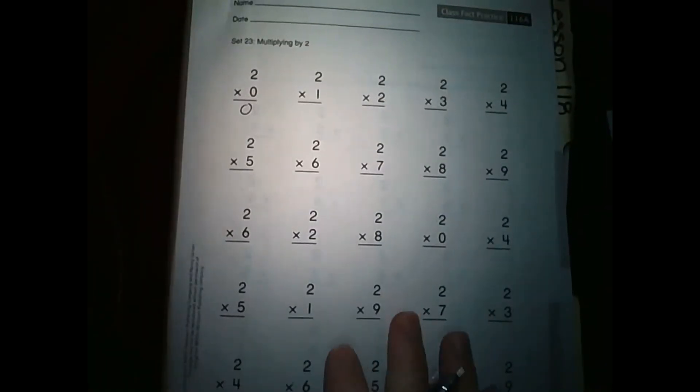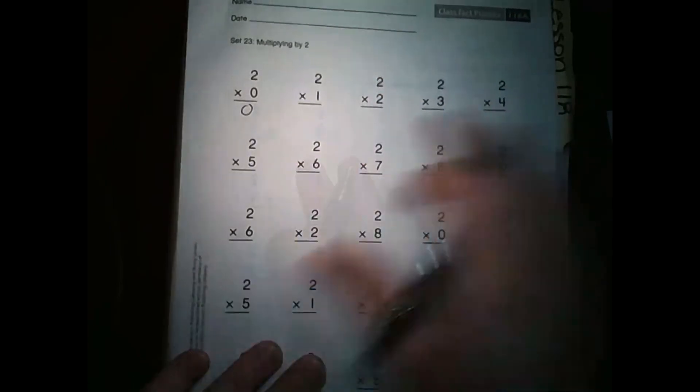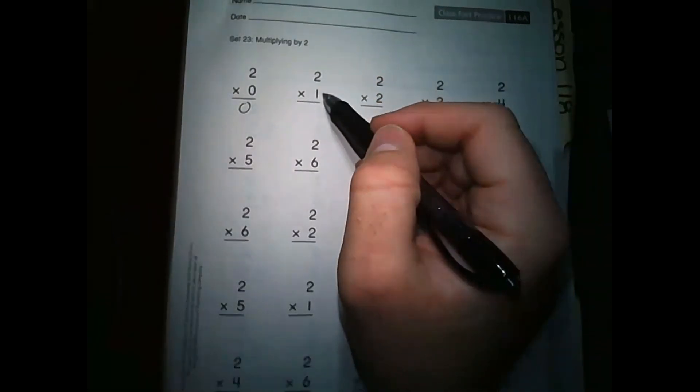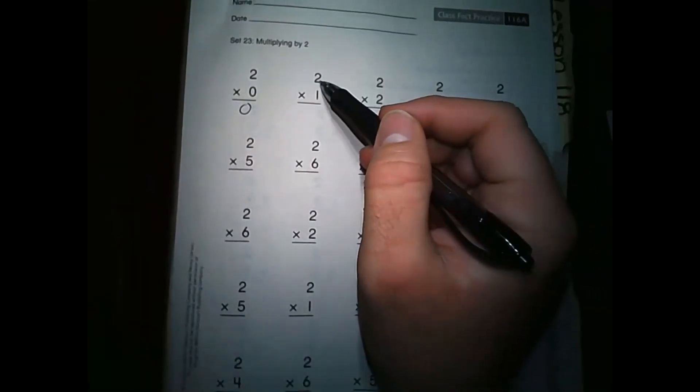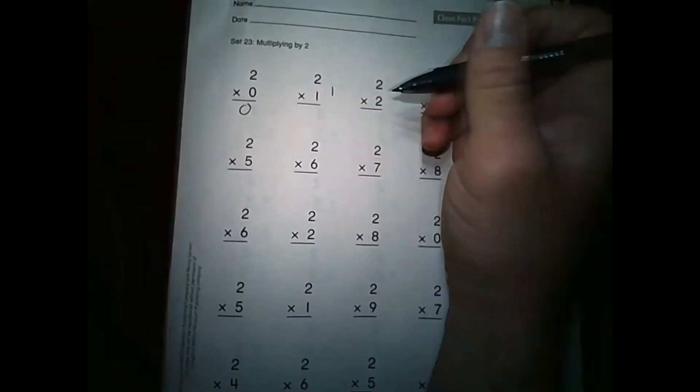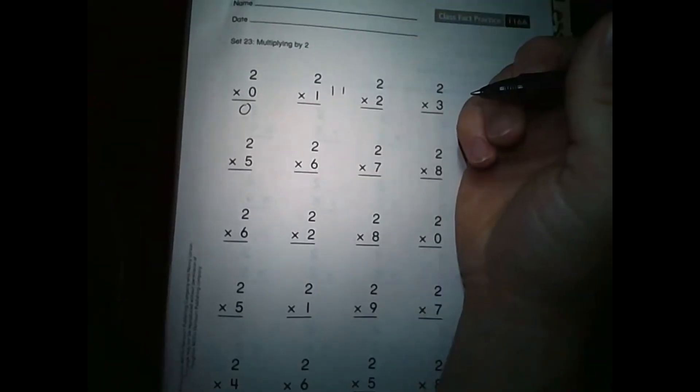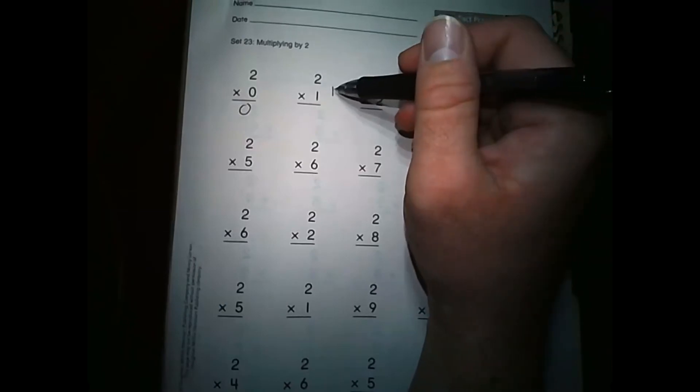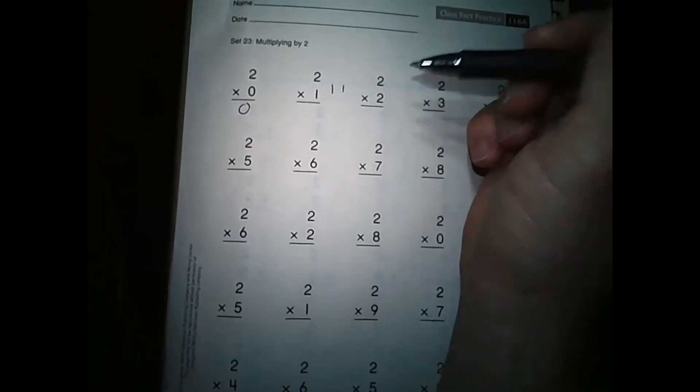Looking at the next one, two times one, this is telling us we have two ones. So two times one, I've got one group here, two right there, so two times one would be one, two. That's it guys, two.